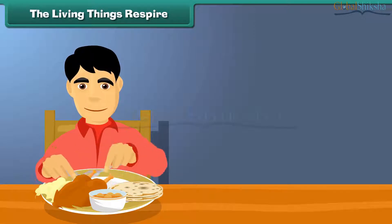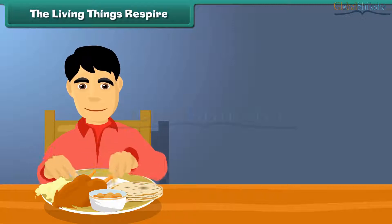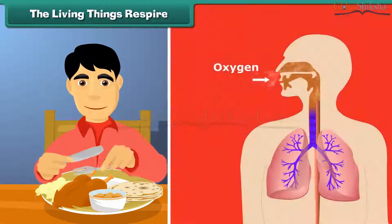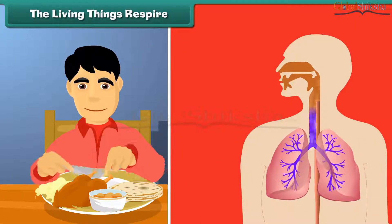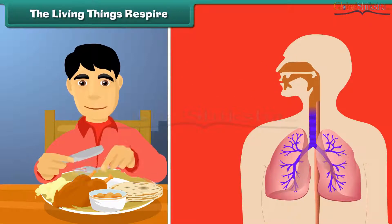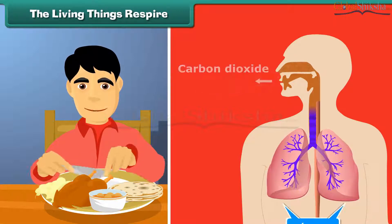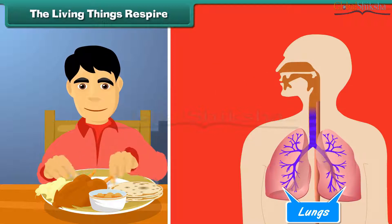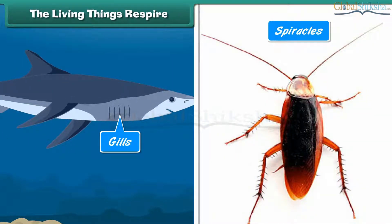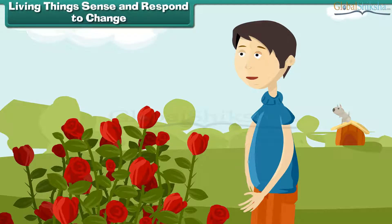Living things respire. Living things require oxygen to get energy from food. They get the required oxygen through the process of respiration. During respiration, oxygen is breathed in and through the blood it reaches each and every cell of the body. Human beings have lungs for respiration, fishes have gills, and cockroaches have spiracles.